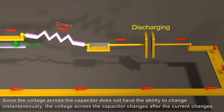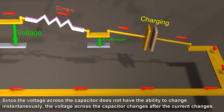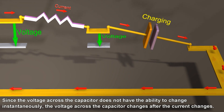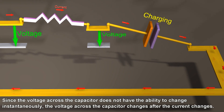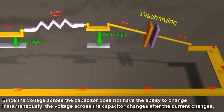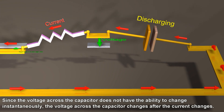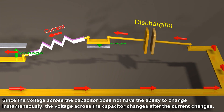Since the voltage across the capacitor does not have the ability to change instantaneously, the voltage across the capacitor changes after the current changes.